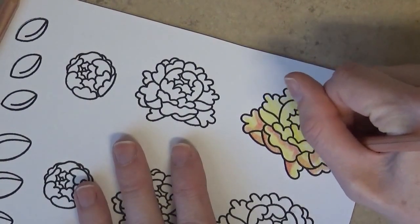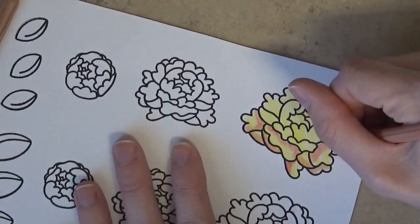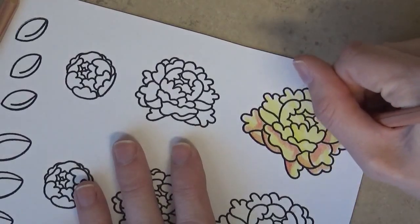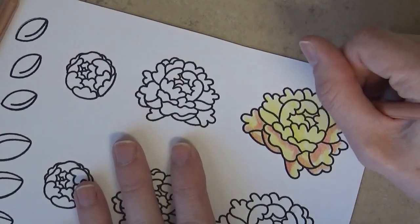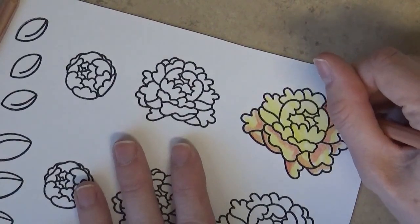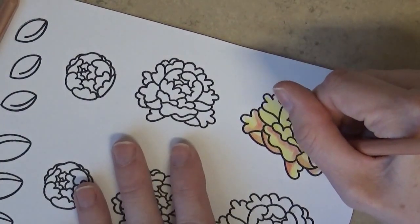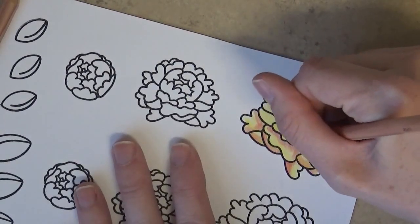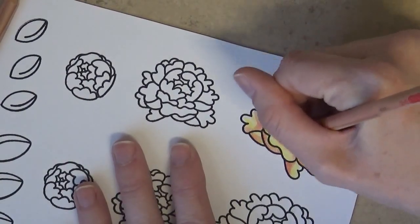If you're wondering I did stamp these images in Versafine's black onyx ink. It's a permanent water resistant ink. It shouldn't run if you use water or anything. Which I'm not going to do, but if you were doing Copics or watercolor it would be a good ink for that as well. I'm just working kind of quickly, not really taking my time, just trying to show you how easy these are to use.